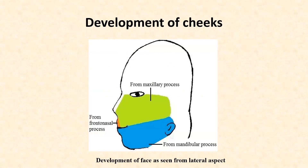This diagram shows the development of the cheek. The cheeks are formed by fusion of the posterior parts of the maxillary and mandibular processes.